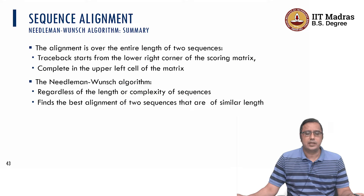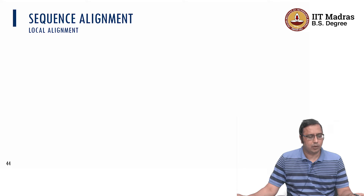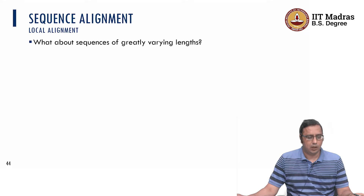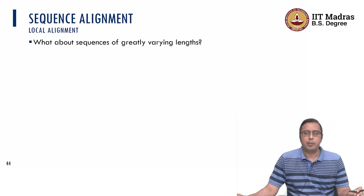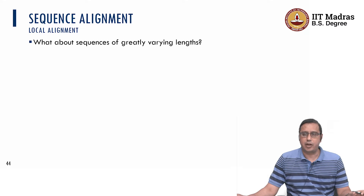So far, we have discussed the global alignment problem. Now the question we are asking is: what about the local alignment problem? What about sequences greatly varying in length? This is a question we often encounter when we try to do sequence alignments.